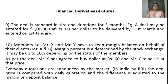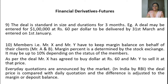When two people want to buy and sell foreign currency, they are not doing it directly — they do it through brokers. A has a broker, B has a broker, and these brokers are members of the clearing house. So the contract is done with the clearing house through the broker between A and B. A deal is in standard size with a duration of three months. Members, Mr. X and Mr. Y, have to keep a margin balance on behalf of their clients. Margin percentage is determined by the stock exchange — it may be up to 10% depending on the status of the member.